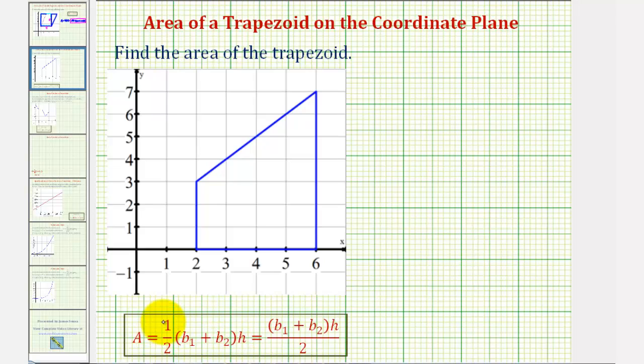Normally a trapezoid is sitting on one of its bases, but not in this case. Notice how the two parallel sides would be this side and this side, which would be base one and base two, or b sub one and b sub two.